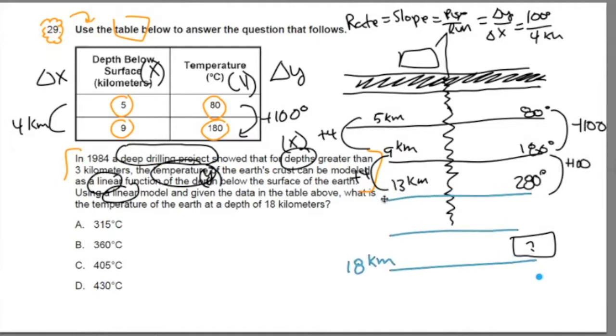Let's do it again. Let's add another 4 kilometers to that. Keep on drilling. 13 plus 4 is 17 kilometers. Plus another 100, that's 380. Now we're not quite at the 18 kilometers yet. But at 17 kilometers, temperature, if we continue this linear pattern, is at 380 degrees Celsius.